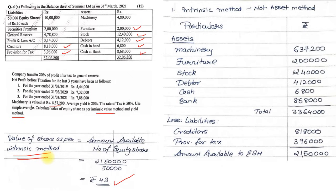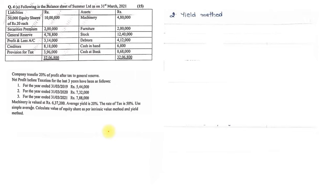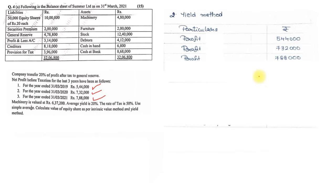Now for the Yield Method (also known as the Capitalization Method). First, find the average profit. Three years' profits are 5,44,000; 7,32,000; and 7,88,000. Total is 20,64,000. Average profit = 20,64,000 / 3 = 6,88,000. Since the tax rate is 50 percent, less tax of 3,44,000 gives Profit After Tax of 3,44,000. Then 20 percent is transferred to General Reserve, which is 68,800. Profit available to equity shareholders = 2,75,200.